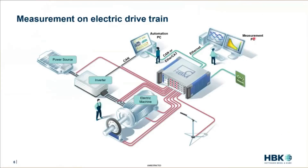Here you can see a typical example of how such a drive train could look like. We have the electrical machine, we have an inverter, which is used to transfer energy from a power source to the machine or operate in generator mode.